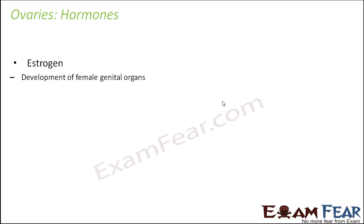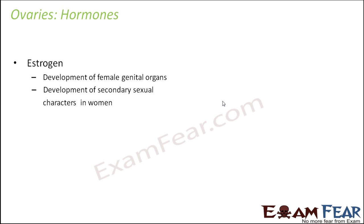One important hormone produced by the ovary is estrogen. It helps in the development of female genital organs like the ovary, uterus, and fallopian tubes. It also helps in the development of secondary sexual characters in women, such as lesser body hair compared to men, development of breasts, and a higher-pitched voice. It also influences female sexual behavior, that is the desire for sexual activity in females.